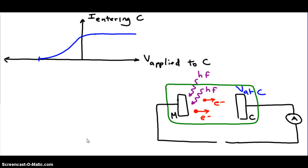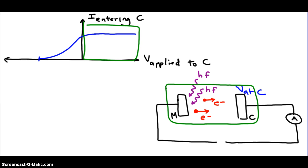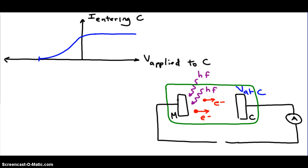First, let's briefly review what the graph represents. Consider the right half of the graph. On the right half of the graph, we are dealing with positive x values. The x-axis tells us the voltage that we've applied to the collector plate C. If we are applying positive voltages, then the collector plate must be connected to the positive terminal of the battery.